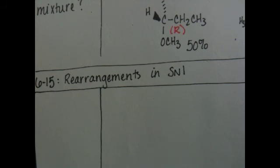For example, if you produce a secondary carbocation in the SN1 mechanism, if it's possible for that carbocation to rearrange and turn itself into a tertiary, it's going to do it.